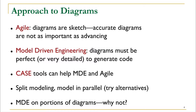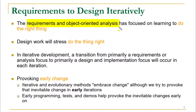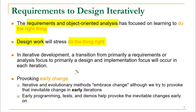When doing requirements in object-oriented analysis, we focus on doing the right thing — we make sure we don't capture the wrong requirements and know exactly what to do. When working with design, we focus on doing the thing right — whatever is to be done should be done correctly. If our design is not correct, we are going to get wrong output. Iterative and evolutionary methods embrace change, meaning they can cope with changes in later stages, although we try to provoke inevitable change in early iterations.